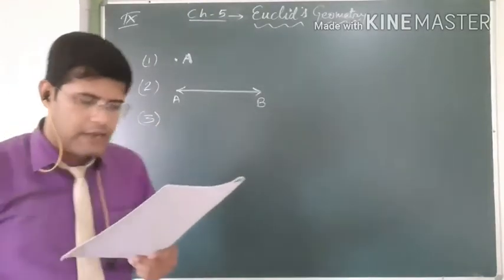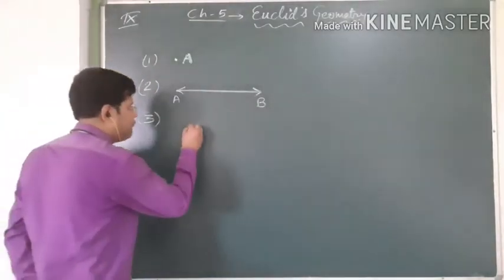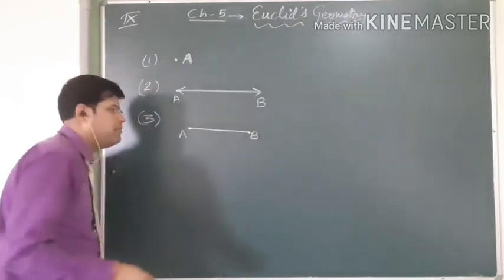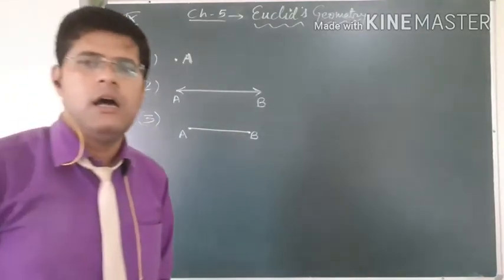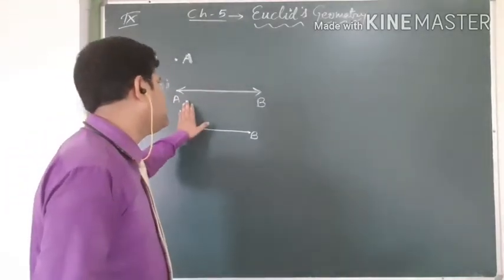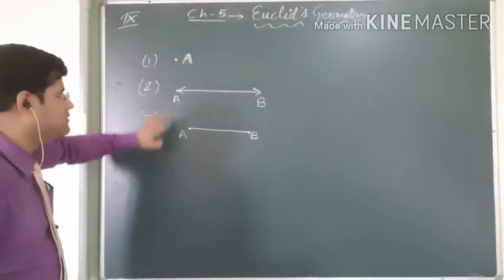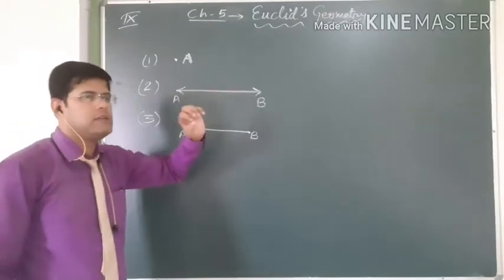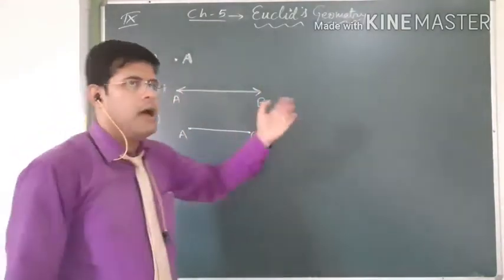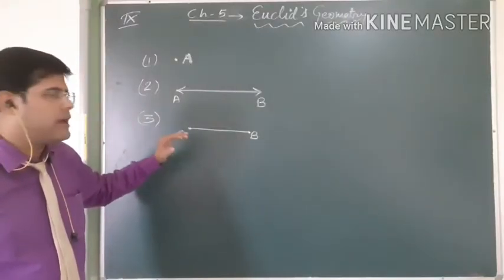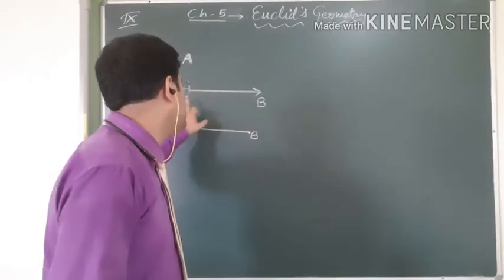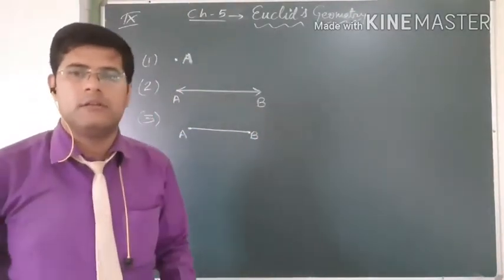The third definition: the ends of a line are points. If you take a line, it has two end points, named A, B or P, Q or RS — this is called a line segment. A line has infinitely extending length and can move in any direction, while a line segment has a definite length and two end points. In the line, the marked points are simply points, not end points.